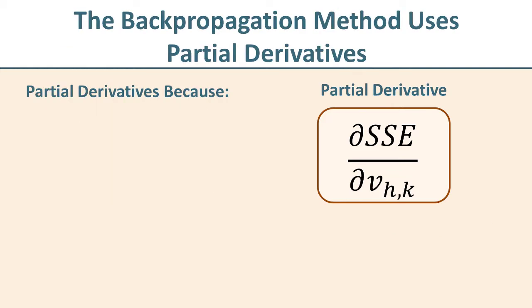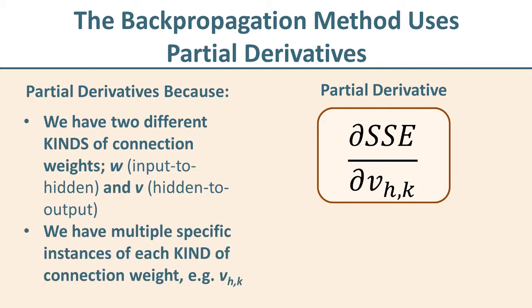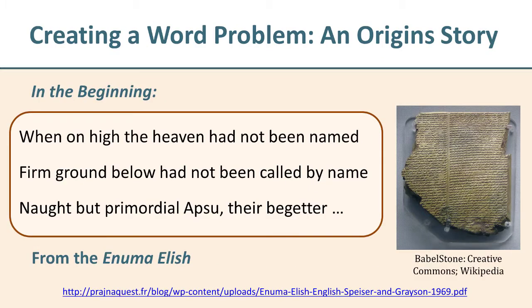We're using partial differential notation because in our derivation we've got two different kinds of connection weights: the w's (input to hidden) and the v's (hidden to output). And for each of those different kinds of weights, we have a full set of possible connections. Note that the mathematics for doing a regular derivative are exactly the same as doing a partial — so everything learned in that first semester of calculus still applies. With that, let's go back to the idea of creating an origin story in the classic sense of storytelling to create a word problem.